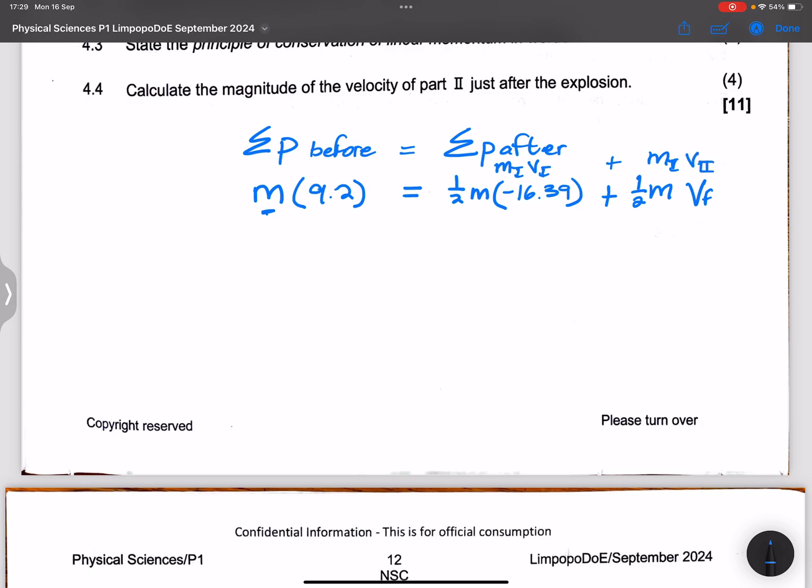So here we've got the mass of the entire part multiplied by its velocity.